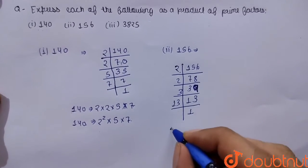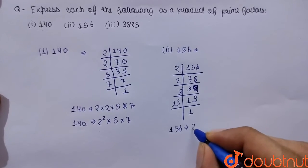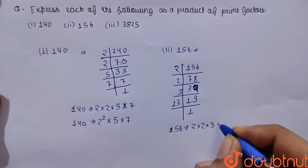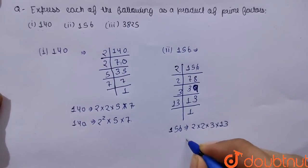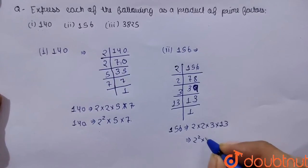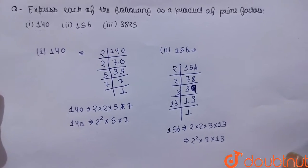So we can write 156 as its product of its prime factor. 2 into 2 into 3 into 13 which can be also written as 2 to the power 2 into 3 into 13.